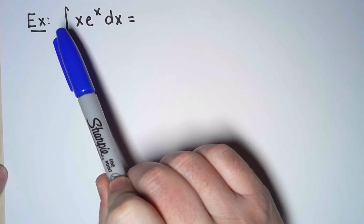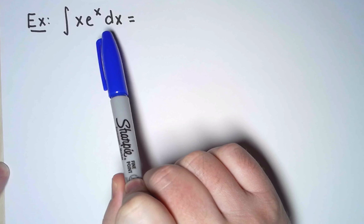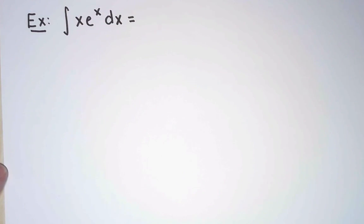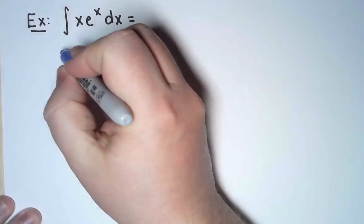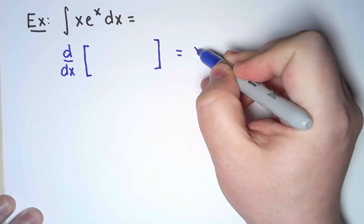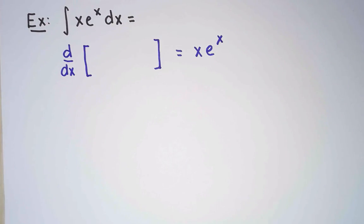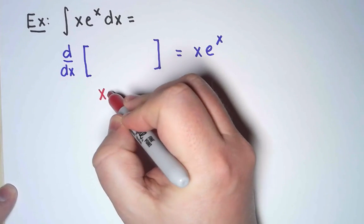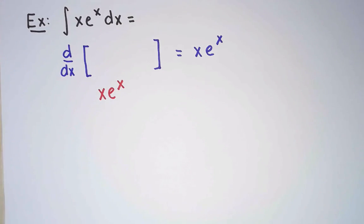I want to integrate x e to the x with respect to x. Since I don't have any more tools for now, I'm just going to try to guess the right answer. So I am looking for a function whose derivative is x e to the x. My first guess is going to be x e to the x itself. I know this is not the right answer, but I am hoping it is related to the right answer.